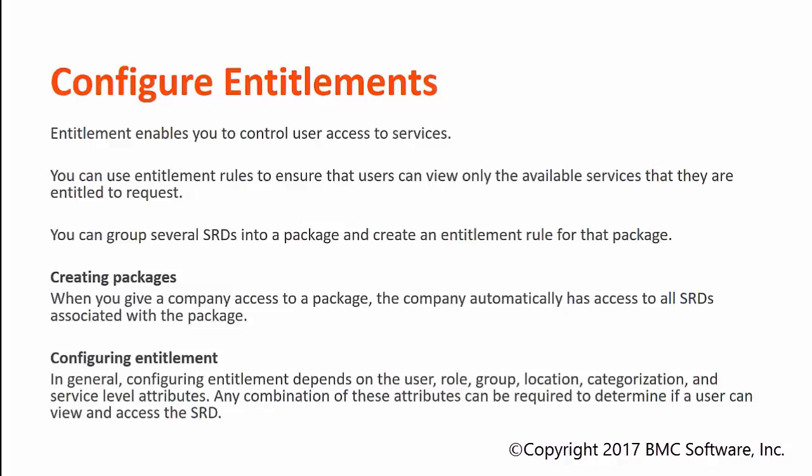There are two ways to configure the entitlement. The first is that you can create one package and group several SRDs into it and create an entitlement rule for that. Another way is you can configure entitlement rules using a combination of user, roles, group, location, categorization, and service level attributes. Any combination of these attributes can be used to determine if a user can view and access the service request definition.